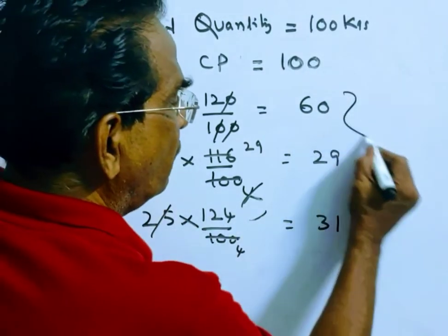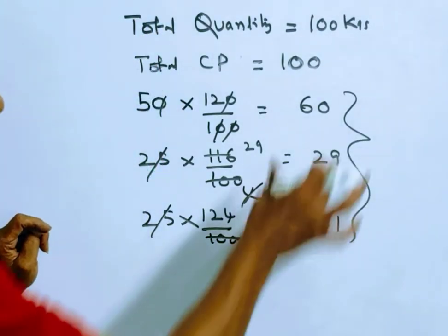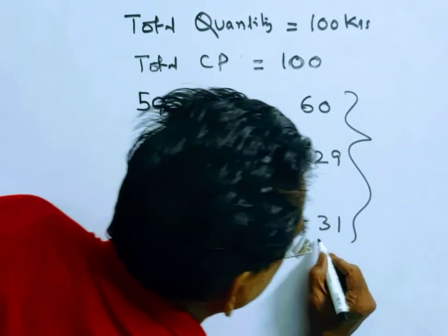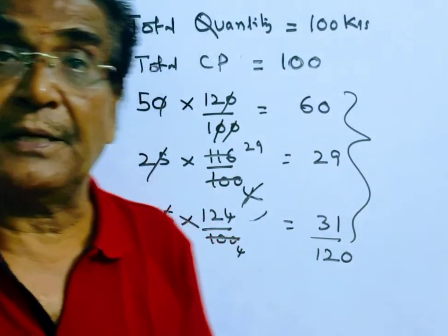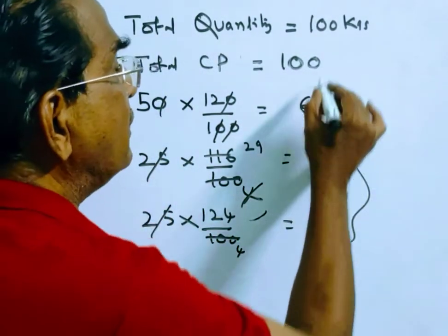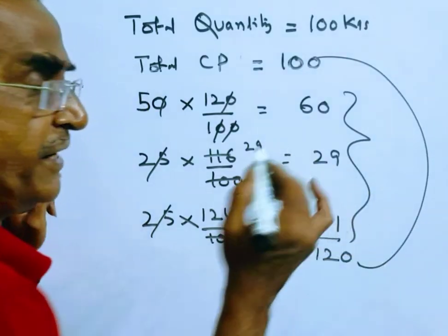Friends, the total amount realized is 60 plus 29 plus 31, 120. Friends, the total amount realized, that is the total selling price is 120. What is the profit? What is the profit? 20 rupees.